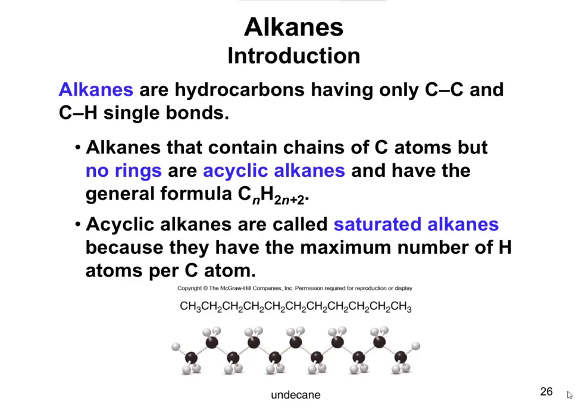Alkanes are a type of organic molecule that only have carbon-carbon and carbon-hydrogen single bonds. They're going to be the simplest type of these molecules. They can come in a couple different forms: they can either be acyclic, which is also referred to as linear, meaning they don't have a ring structure. A cyclic structure would be like a ring — we would call that cyclobutane, where 'cyclo' means ring form.